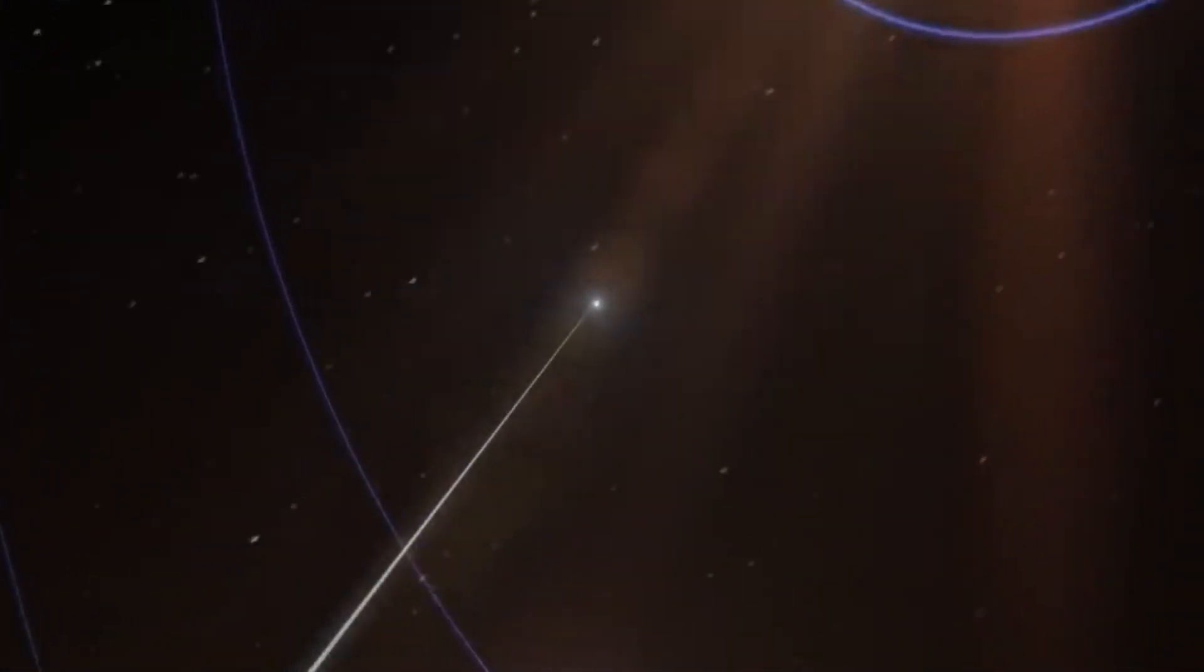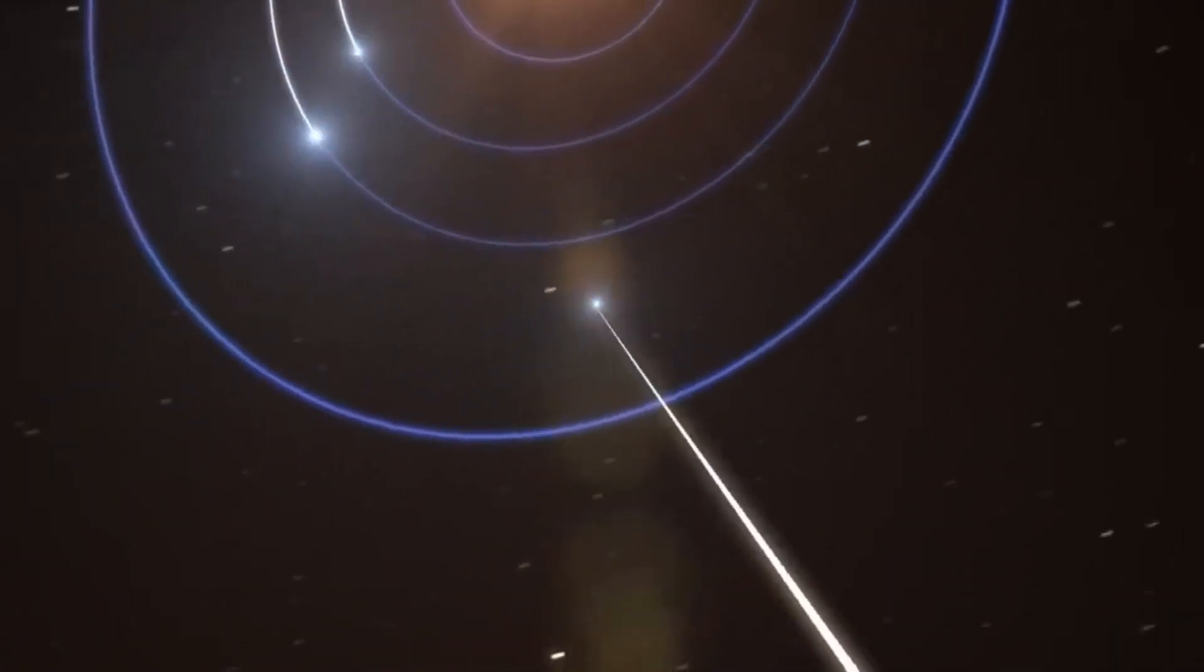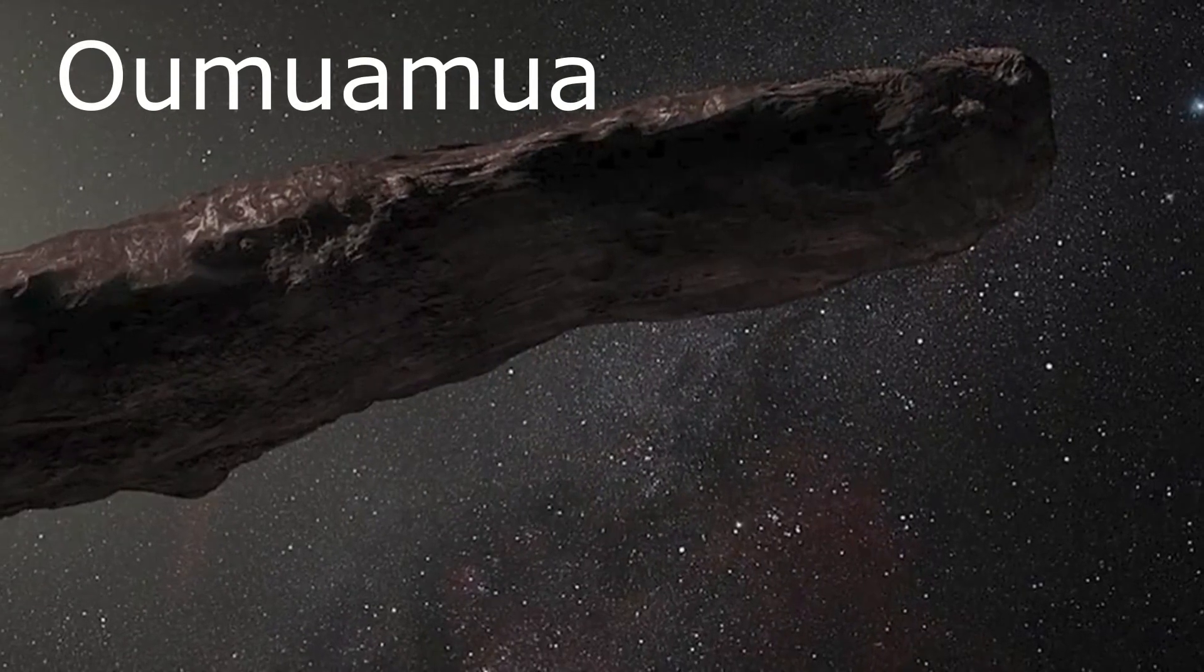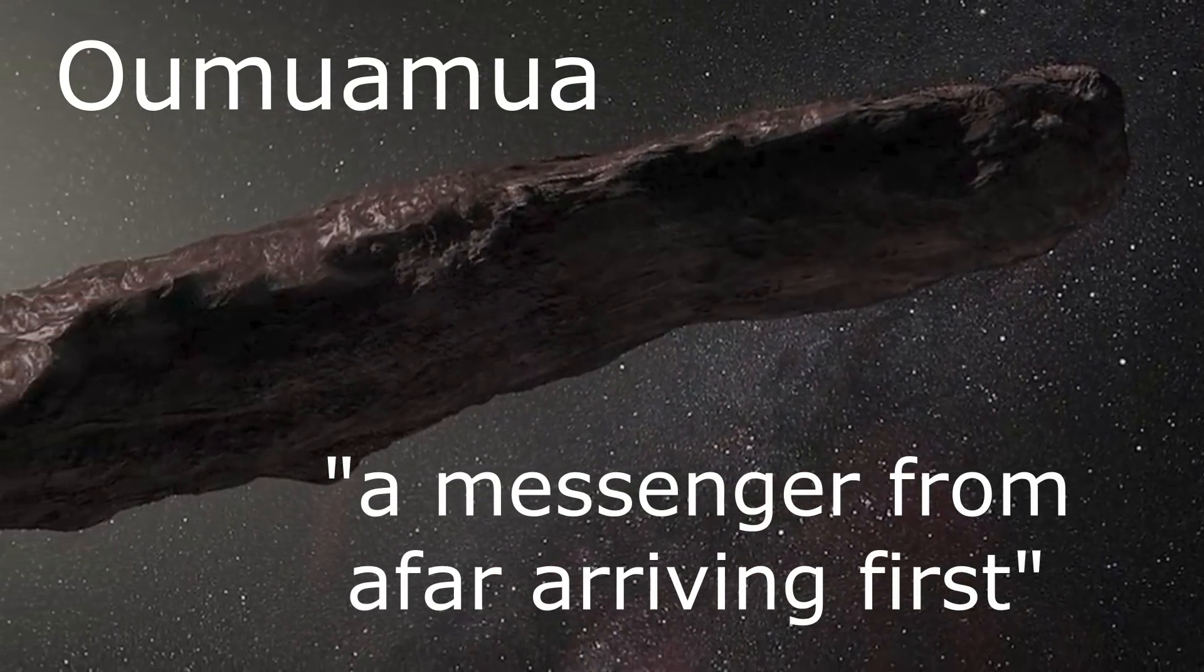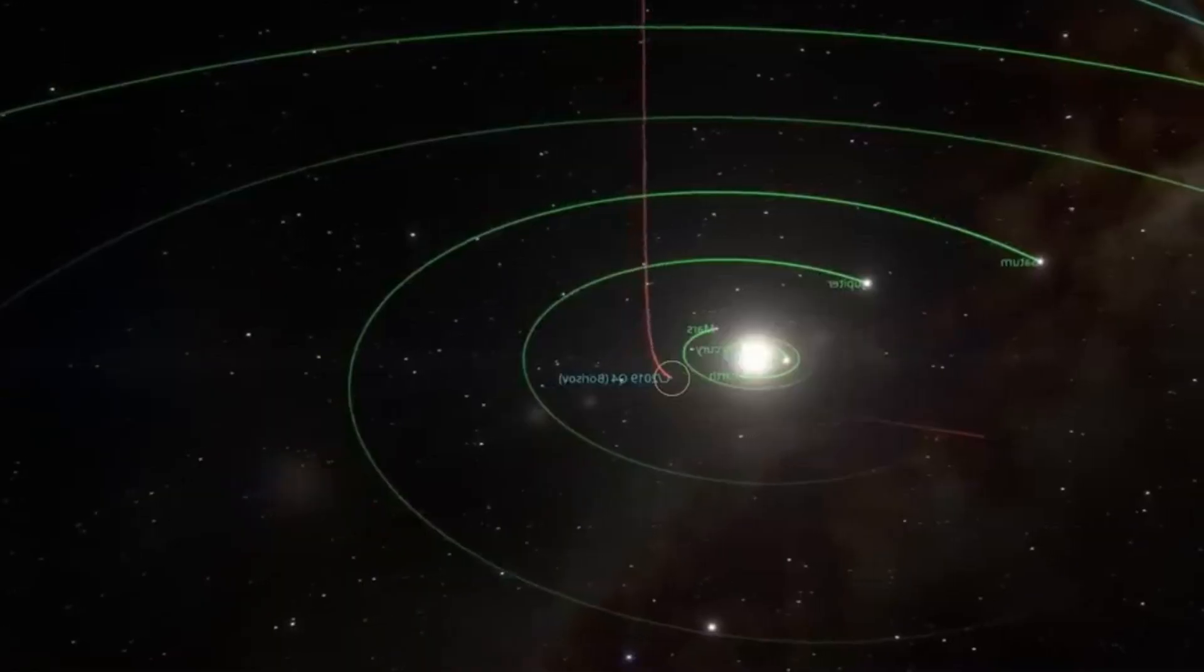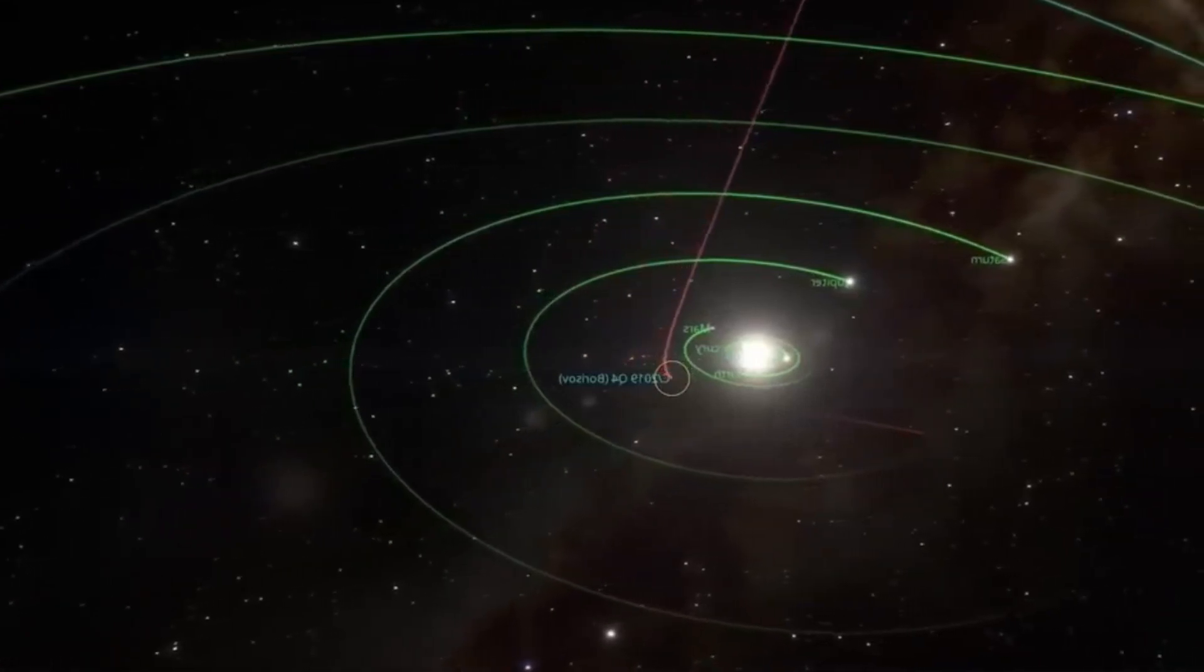This finding garnered attention due to its distinction as the initial verified entity originating from a planetary system external to our own. The object in question is referred to by its Hawaiian name, which translates to a messenger from afar arriving first. This name is particularly apt, given that it is the initial interstellar object to have been detected within our solar system.